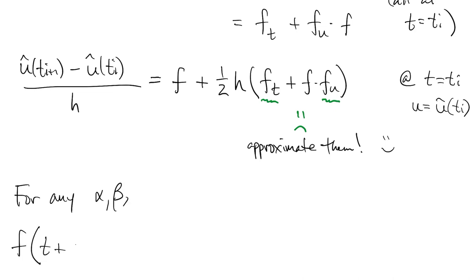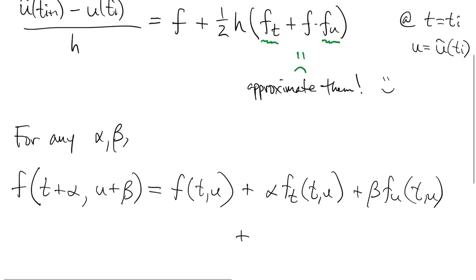We accomplish this by writing out the start of a two-variable Taylor series for f. We only need the first partial derivatives, so we lump together all the higher order stuff.